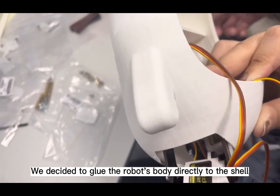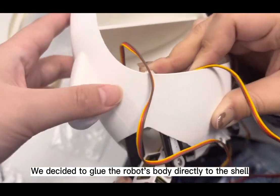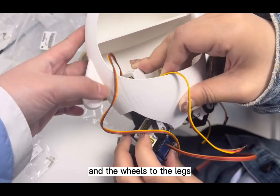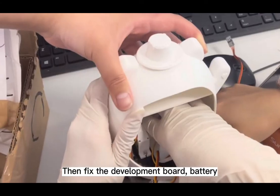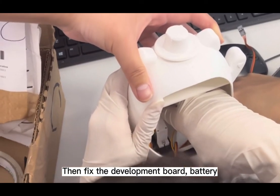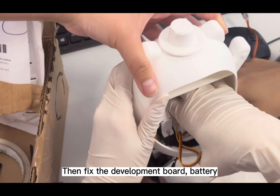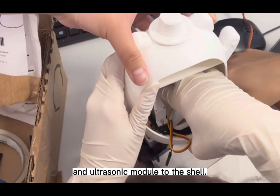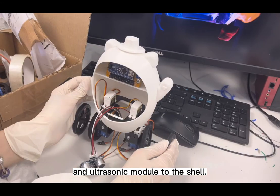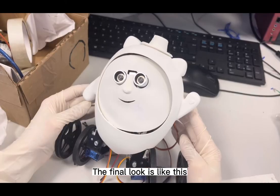We decided to glue the robot body directly to the shell and the wheels to the legs. We fix the development board, batteries, and ultrasonic module to the shell. The final look is like this.